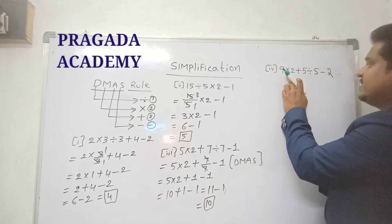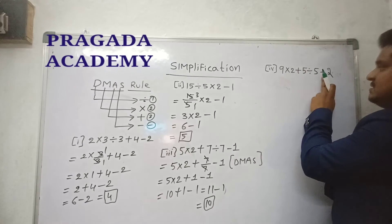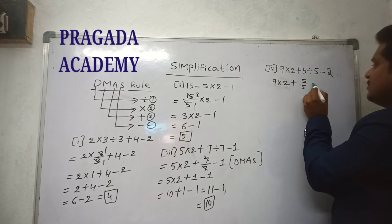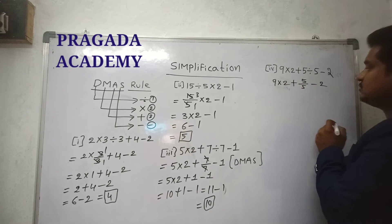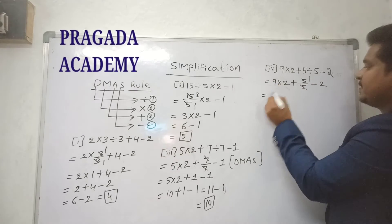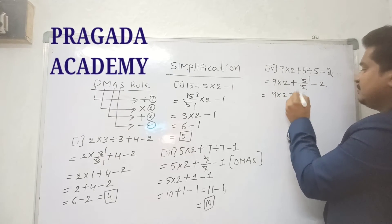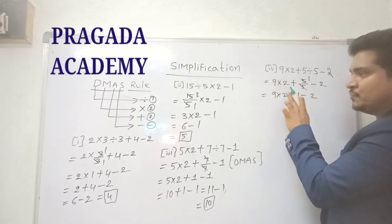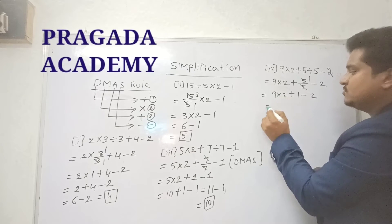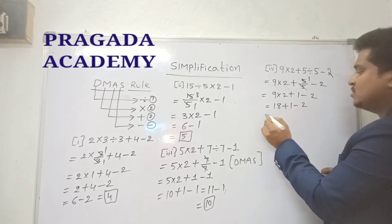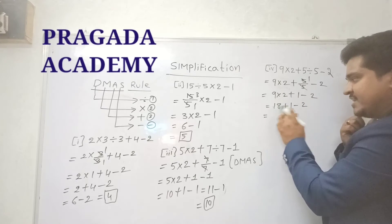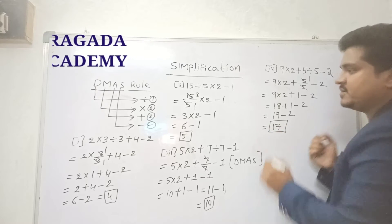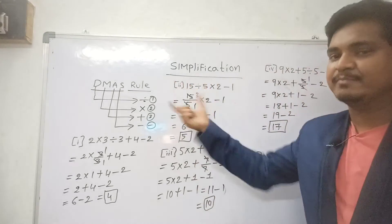Fourth problem: 9 × 2 + 5 ÷ 5 − 2. Again apply DMAS rule. First do division: 5 ÷ 5 = 1. So we get 9 × 2 + 1 − 2. After division, do multiplication: 9 × 2 = 18. Then addition: 18 + 1 = 19. Last, subtraction: 19 − 2 = 17. Like this you can solve problems using the DMAS rule.